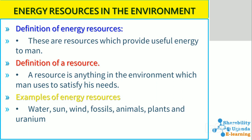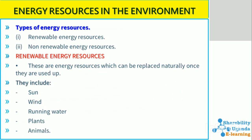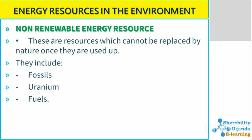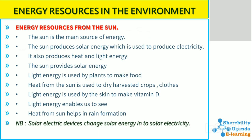Types of energy resources are basically two: renewable and non-renewable. Renewable energy resources are those which can be replaced naturally once they are used up — they include sun, wind, running water, plants, and animals, among others. Non-renewable energy resources are those which cannot be replaced by nature once they are used up; they include fossils, uranium, and fossil fuels, among others.